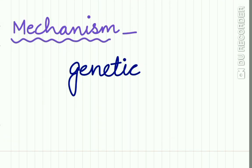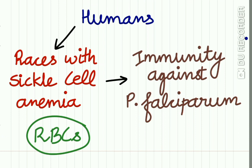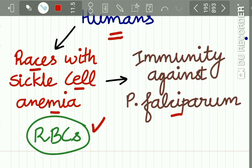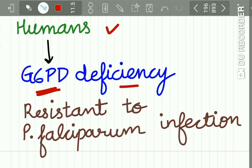The mechanism of racial immunity is mostly genetic. For example, in humans, those races with sickle cell anemia are immune to Plasmodium falciparum infection. This is because in sickle cell anemia there is a genetic abnormality in the erythrocytes, and these abnormal erythrocytes cannot be parasitized by Plasmodium falciparum. Humans with G6PD deficiency are also resistant to Plasmodium falciparum infection.